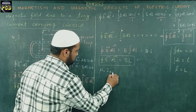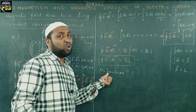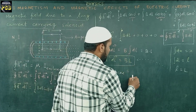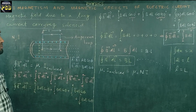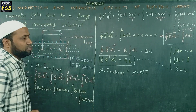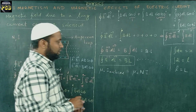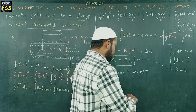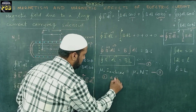Now for the right-hand side: μ₀ times I enclosed. The net current enclosed by the Ampere loop is nothing but NI, where N is the number of turns of the solenoid. If there are N number of turns present in the solenoid, then NI is the total current flowing through the solenoid. I take these as equation 1 (Ampere's law), equation 2 (BL), and equation 3 (μ₀NI). Substituting equations 2 and 3 into equation 1, I get BL = μ₀NI.